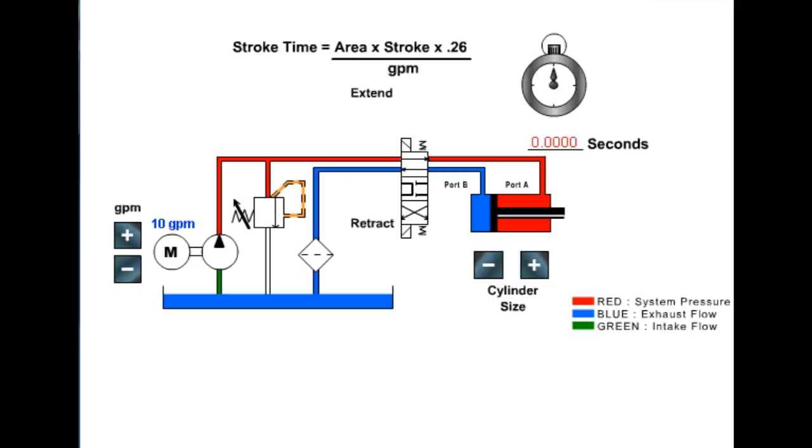In this learning lab, you will learn how flow gives us actuator speed based on a specific pump output and actuator displacement. First, click on extend or retract to begin flow. Use arrows to adjust pump size, GPM, and actuator size. Notice the speed of the actuator as the GPM and or actuator is adjusted.